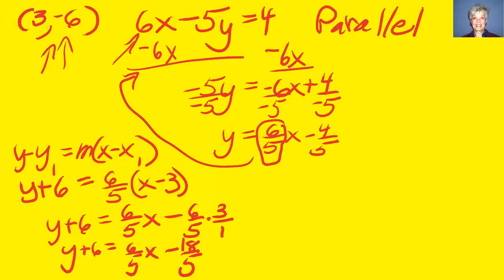Now we're going to subtract 6 from both sides. y equals 6 fifths x minus 18 fifths minus 6. But since I'm not using a calculator, I'm going to transform the number 6, well here negative 6, into a fraction with denominator 5.